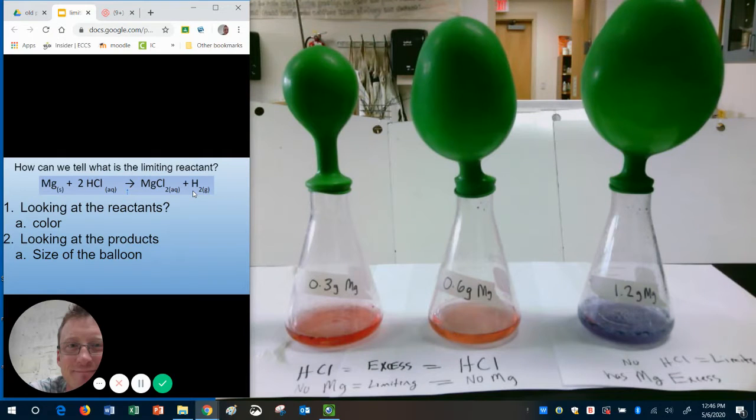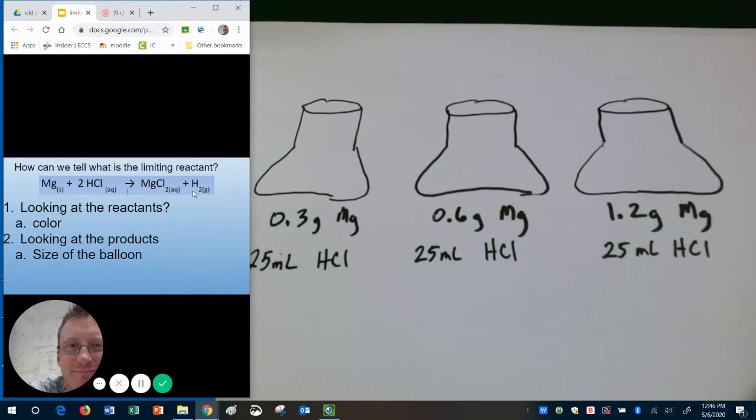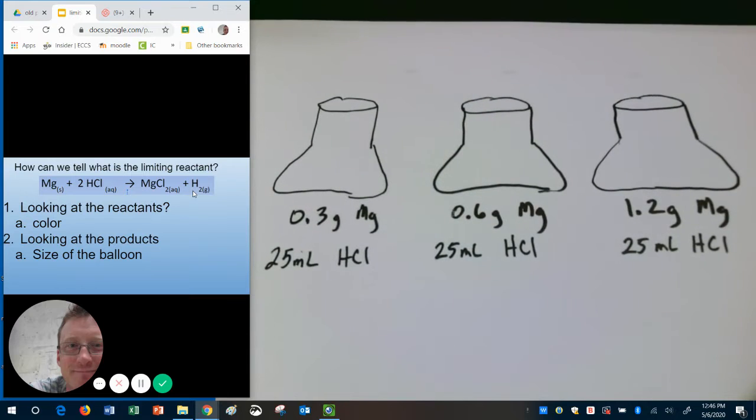There is an experiment that visually shows you how that happens. But let's look at the math here. This is why we would actually use stoichiometry. So looking at some numbers we have the following. Each of these has the same amount of HCl but each of them has a different amount of magnesium.